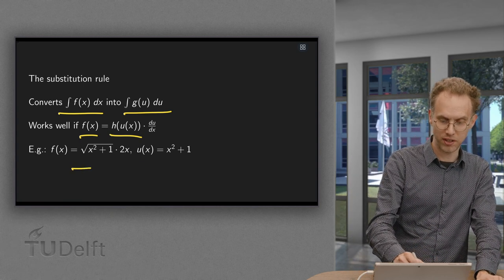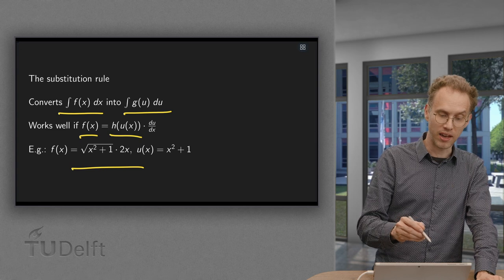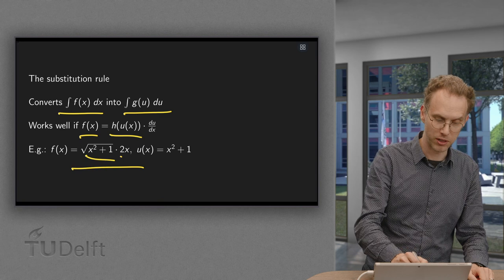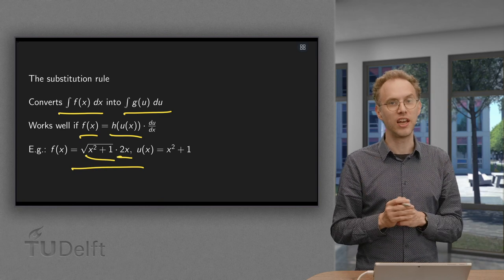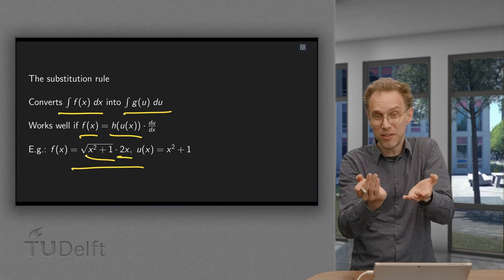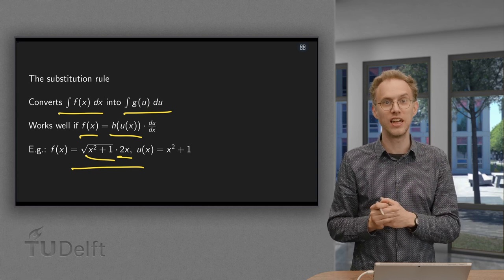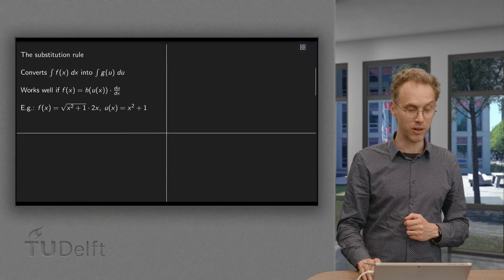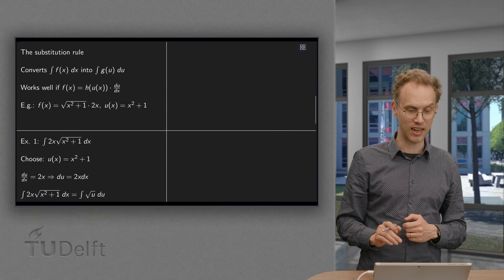If we have this f(x) over here, then f(x) is basically the square root of some rubbish x squared plus 1 times the derivative 2x. So in this case, when your function is like the square root of rubbish times the derivative of the rubbish, in those cases substitution rule does work really nicely. Well, how does it work and why does it work nicely in this case?